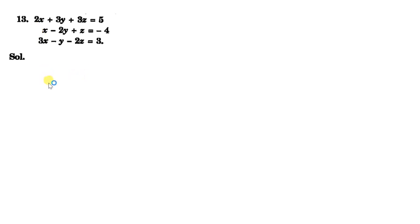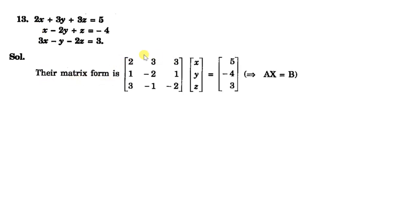Let us take one more question. Again, we will represent the system in the form Ax equal to B. The coefficient matrix A becomes: 2, 3, 3; 1, minus 2, 1; 3, minus 1, minus 2. The variable matrix is x, y, z and we have the constant matrix B. So it is of the form Ax equal to B.